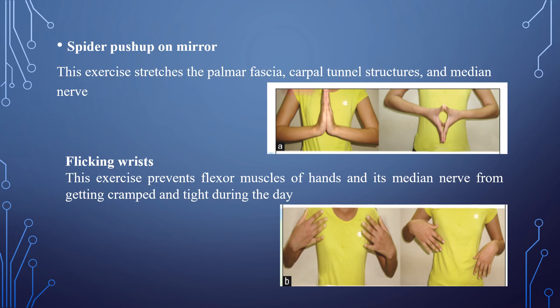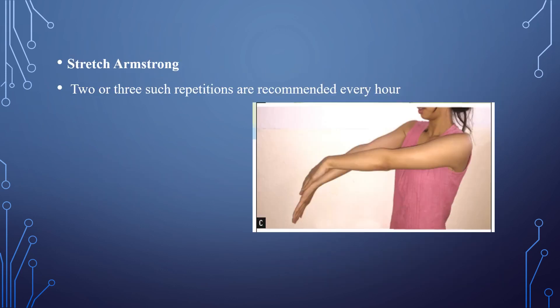We will now show some musculoskeletal disorder-reducing exercises. During and after procedures we should follow some of these exercises. Push-up or mirror positions — doing exercises and flickering of the wrist is one of the things that should be done after procedures, relaxing the fingers and palmar fascia so that the carpal tunnel structures and median nerve are not under excessive stress. Stretching arm exercises with two or three repetitions are recommended every hour so that we can reduce shoulder and joint pains.